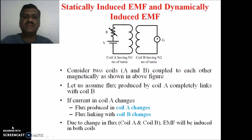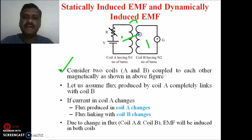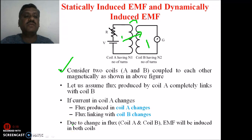Here I will consider an arrangement where we have taken two coils, that is coil A and coil B. The assumption is that these two coils are coupled to each other, and flux produced by A completely links with coil B. If the current in coil A changes, then flux produced in coil A changes and the flux linking with coil B also changes, and due to the change in flux, EMF will be induced in both coils.